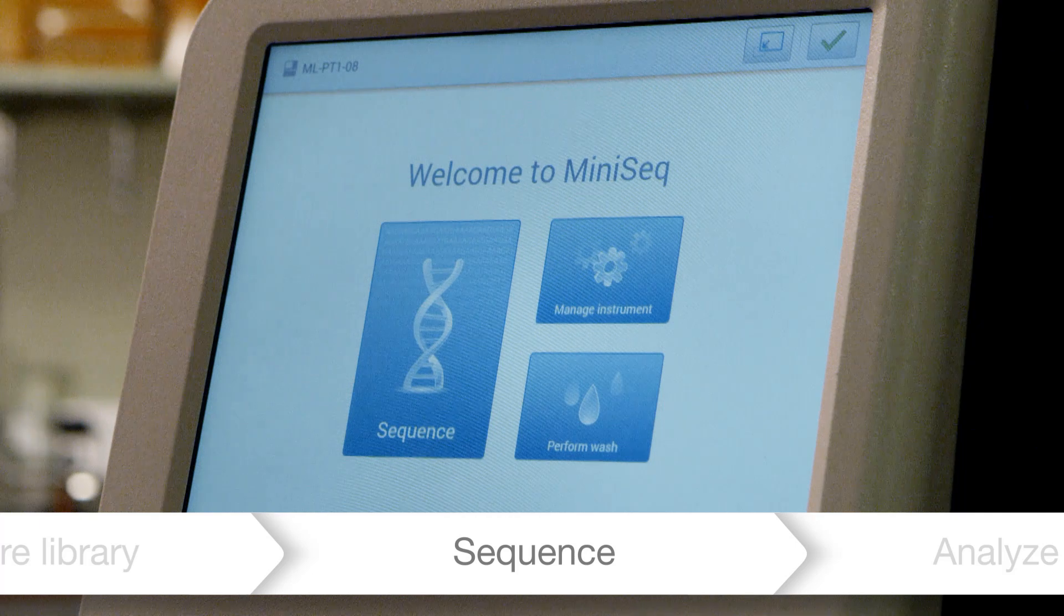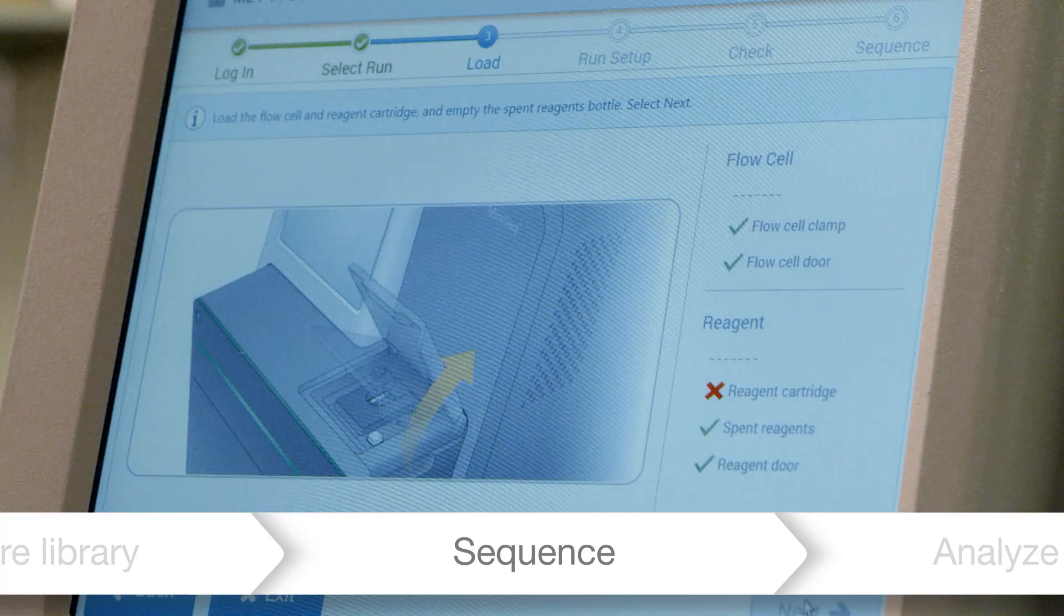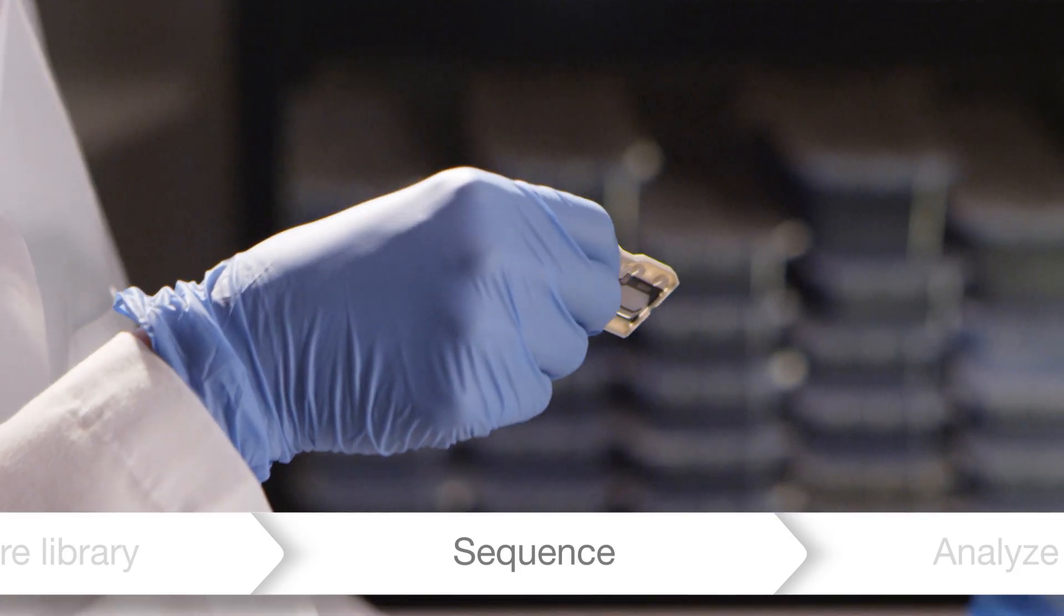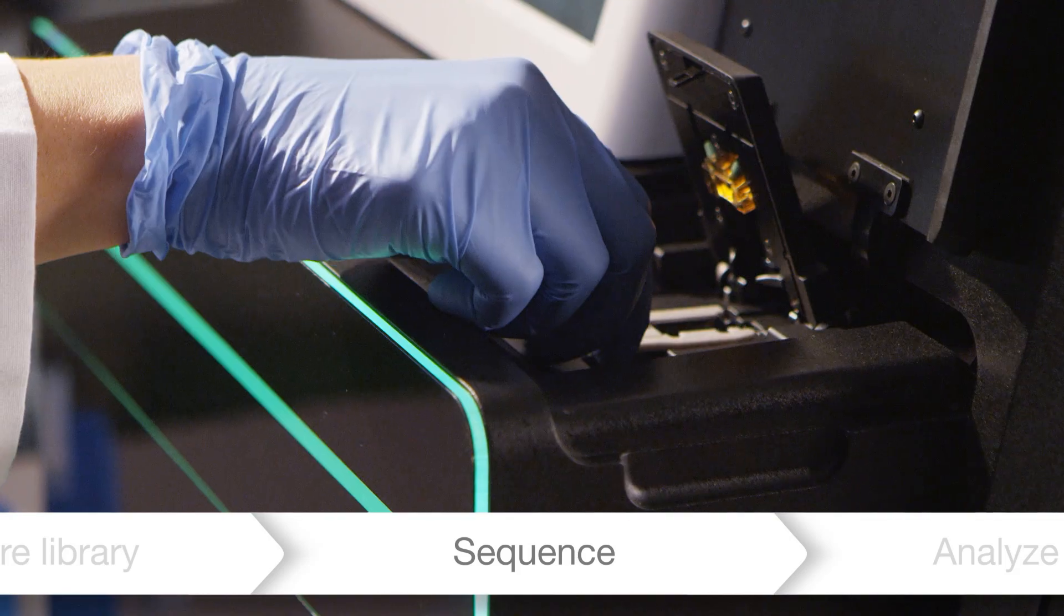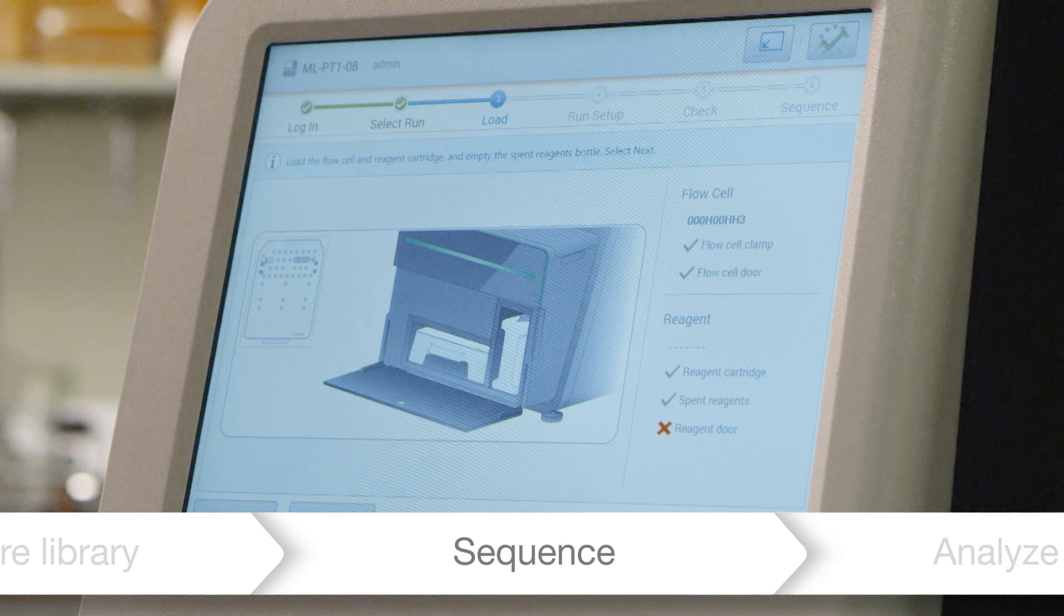Sequencing with the Mini-Seq system is as easy as following the prompts. All required reagents are delivered in a single integrated cartridge and different kit configurations enable efficient sequencing across a range of sample quantities from 1 to 100.